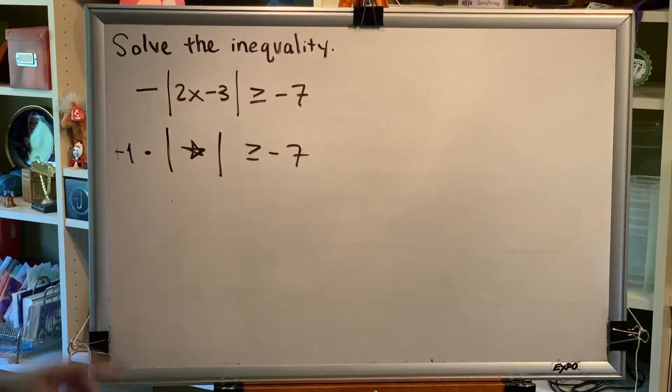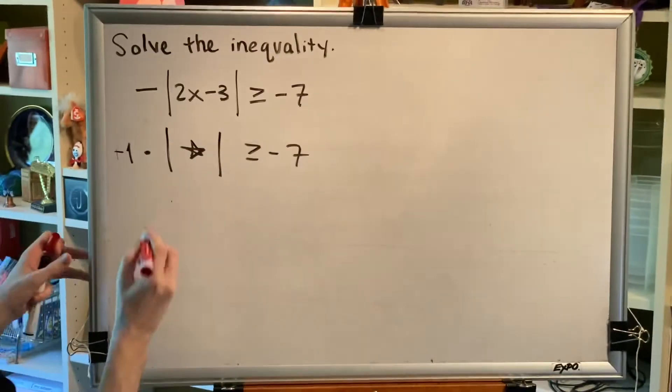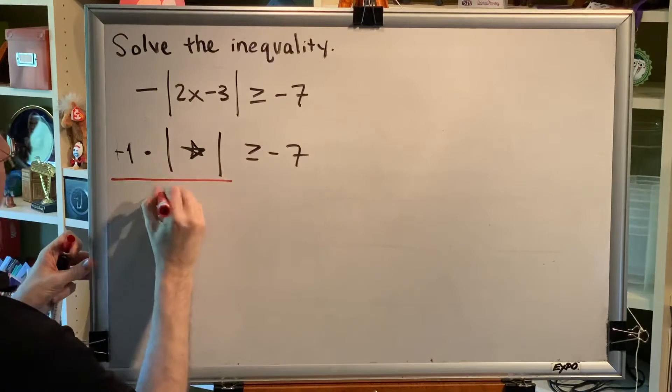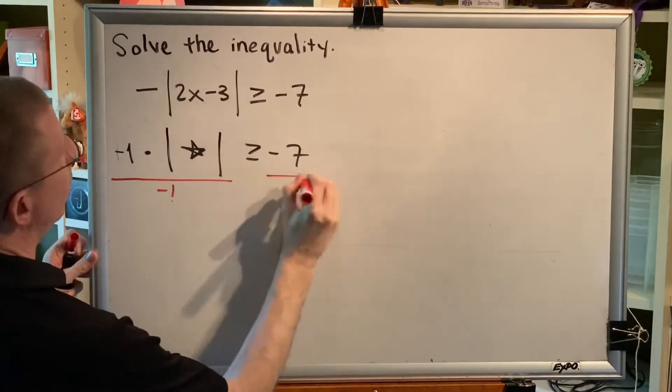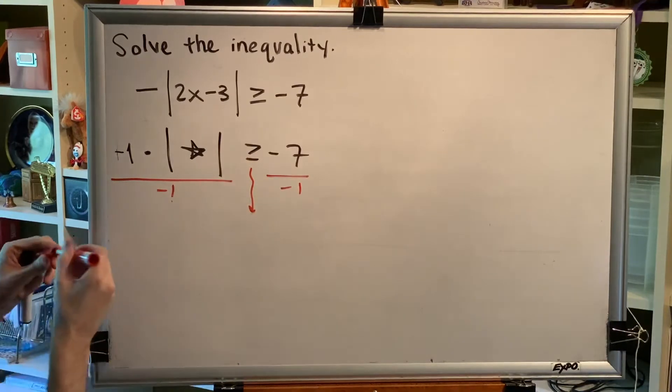Now, how am I going to get rid of this negative 1? Well, since the negative 1 is multiplying, I'll do the opposite. I will divide the entire left side by negative 1 and the entire right side by negative 1. But when I do, I have to remember to flip the sign.